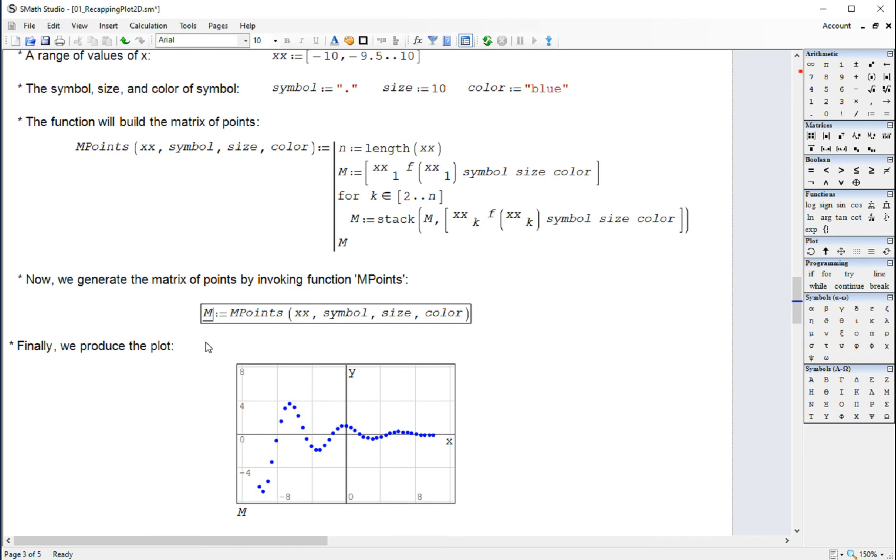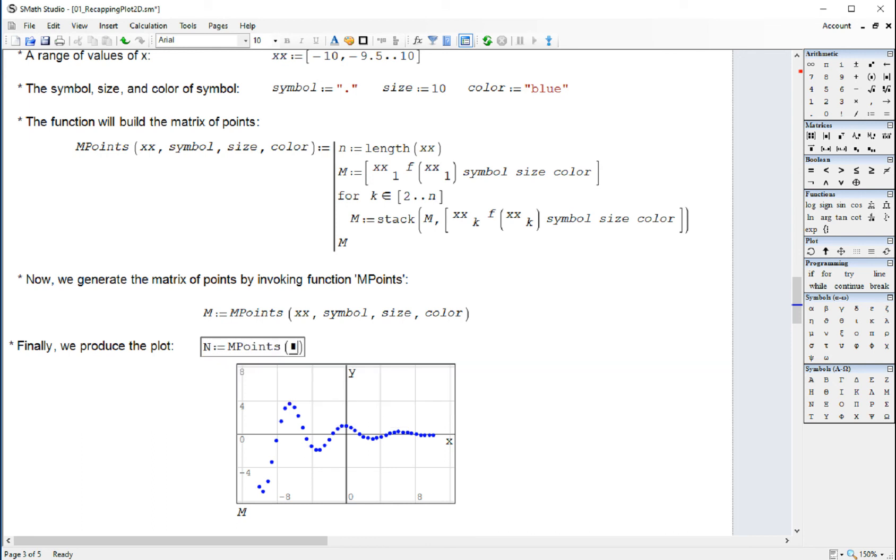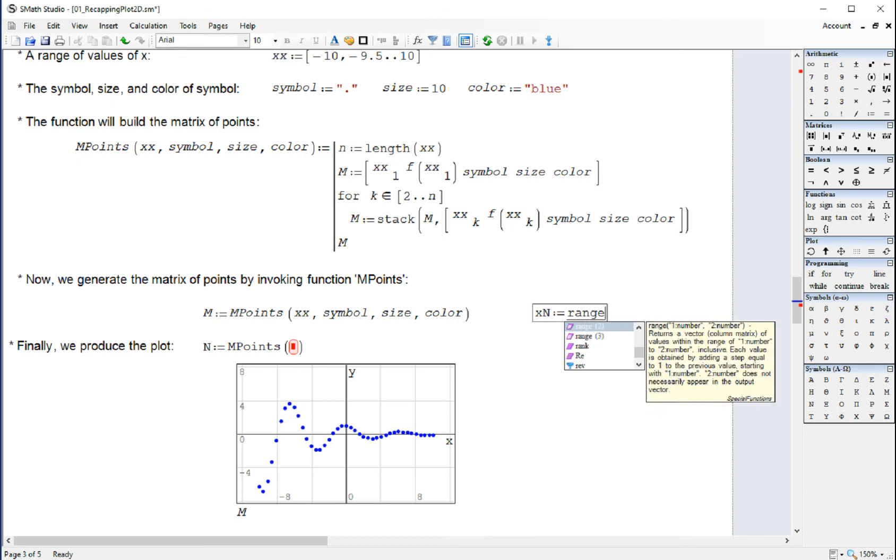Suppose that you want to create another matrix and let's call the matrix n. And I'm going to create a different range. I'm going to go X n. Instead of going from minus 10 to 10, I'm going to go from minus 5 to 5.